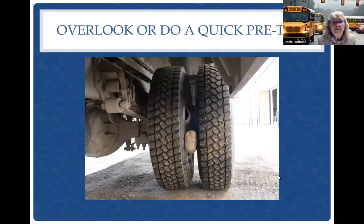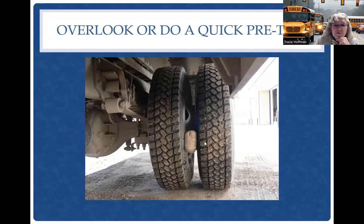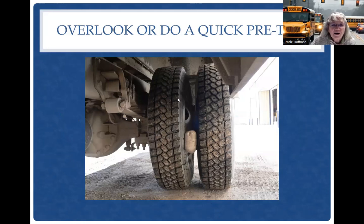With our pre-trip — this was a picture the mechanics took. Think about what kind of injury or jeopardy this could put someone in if left undetected. This rock could fly out the back and hit the windshield of a car behind the bus, or get wedged in far enough to damage a tire and cause a blowout. Part of your pre-trip should be checking your wheels. A quick or overlooked pre-trip could cause an accident.